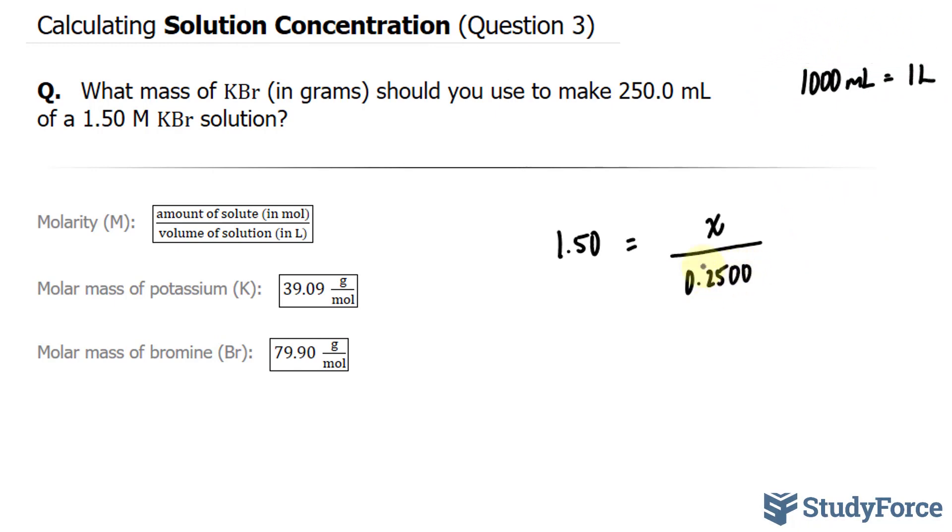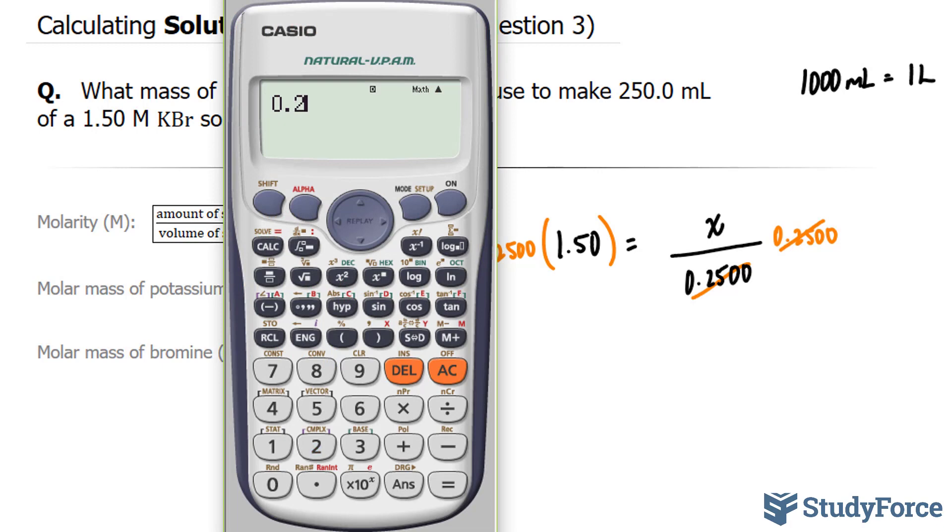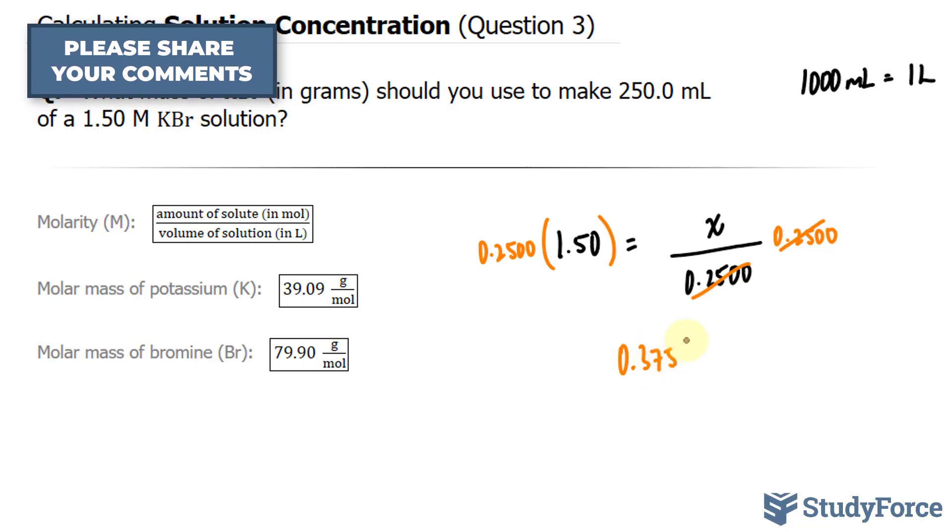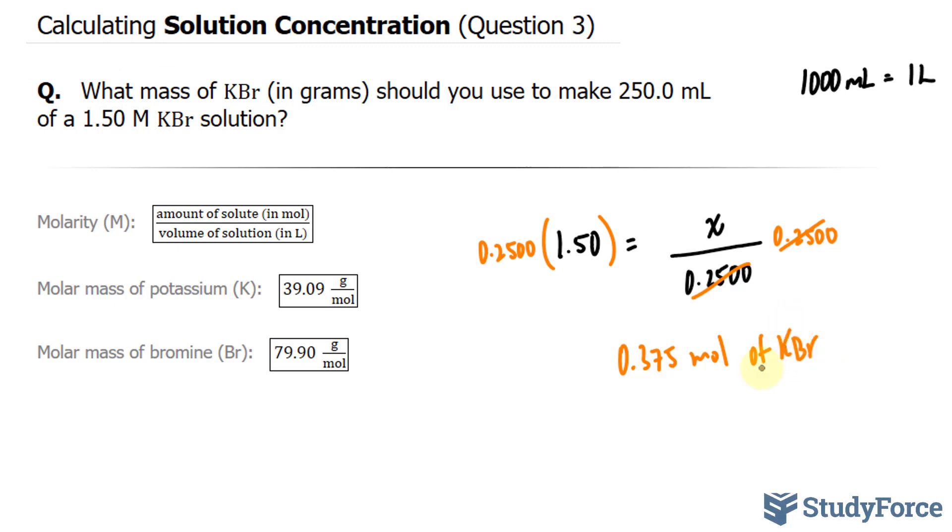Notice that I've retained the four significant figures that was originally in that number. Now, to find X, we multiply both sides of this equation by 0.2500. And we end up with this, canceling out with that. 0.2500 times 1.50 gives us 0.375 moles of potassium bromide. I stopped after three significant figures, because of these two numbers, you have to take the lower amount when it comes to multiplying and dividing.